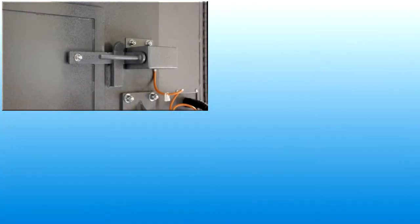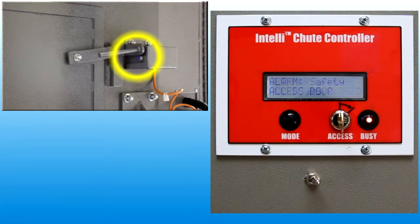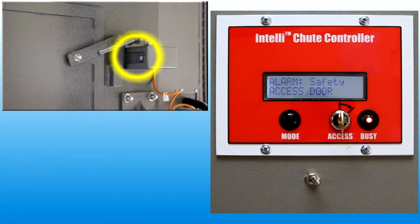The access door sensor detects the position of the door latch. When the latch is open, the control system generates a safety message and locks out the chute system.